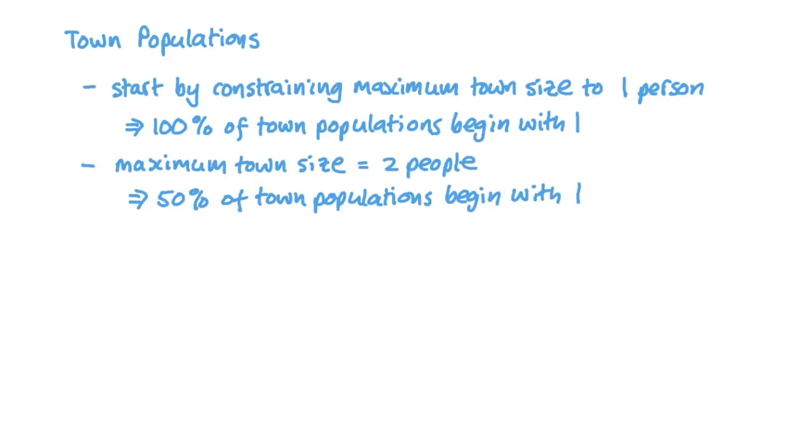If the largest town population was two, then on a random distribution basis, about 50% of populations would have a first digit of one, and 50% would have a first digit of two. We've got two choices. And again, no first digits would be higher than that. As the maximum size of the town increases up to nine, the proportion of towns you'd expect to have a first digit of one decreases down to a ninth, about 11%.